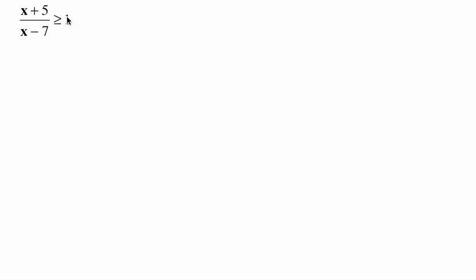We want it equal to 0 because then we're just looking at the rational expression in terms of being positive or negative. So I want to get rid of this 1, so I'm going to subtract 1 from the right-hand side. Whatever I do to the right-hand side I have to do to the left, so I'm going to subtract 1 from this whole thing. So I get x plus 5 divided by x minus 7 minus 1 is greater than or equal to 0.